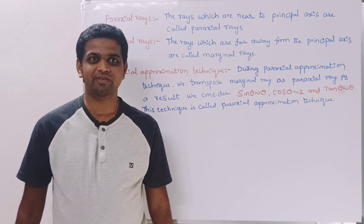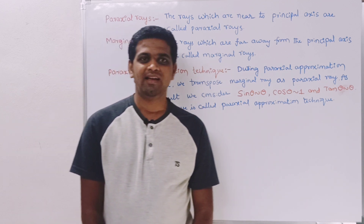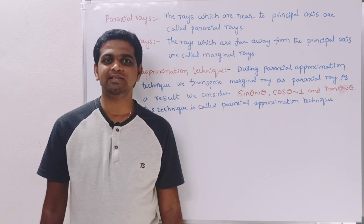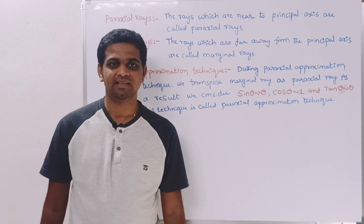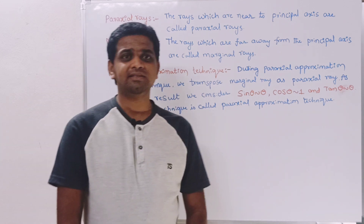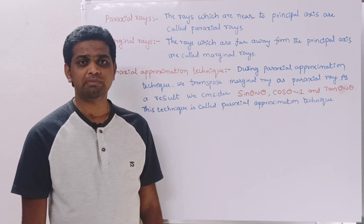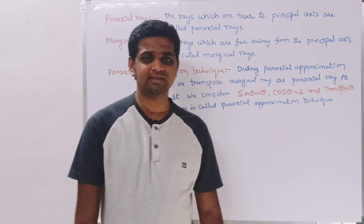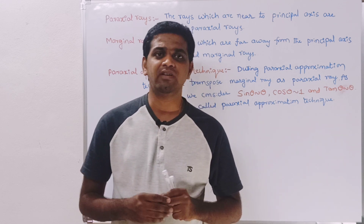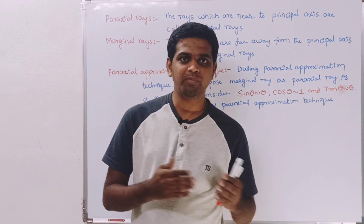In this video we are going to discuss paraxial rays, marginal rays, and the paraxial approximation technique. Paraxial rays are rays which are nearer to the principal axis. The ray which is traveling very near to the principal axis is called a paraxial ray. Marginal rays are the opposite — rays traveling far away from the principal axis.